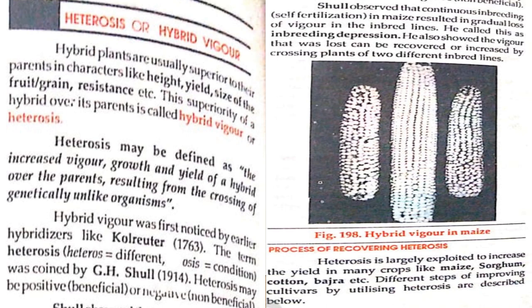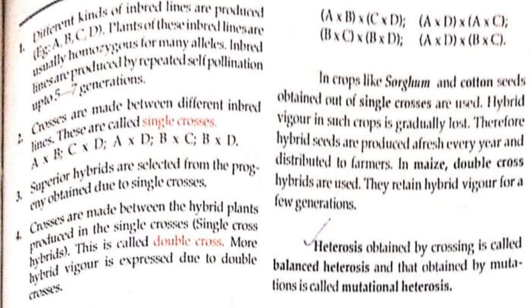Shull observed that continuous inbreeding or self-fertilization in maize results in a gradual loss of vigor in the hybrid line. He called this inbreeding depression. He also showed that the vigor that was lost can be recovered or increased by crossing plants of two different inbred lines. The process of recovering heterosis is largely exploited to increase yield in many crops like maize, sorghum, cotton, bajra, etc.